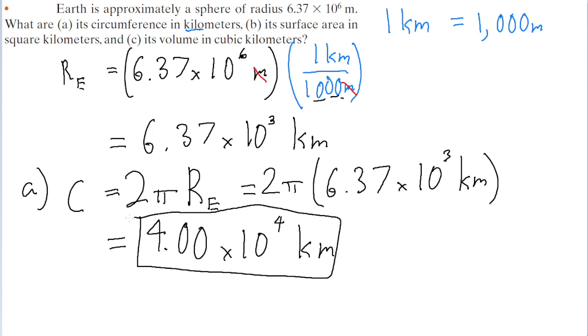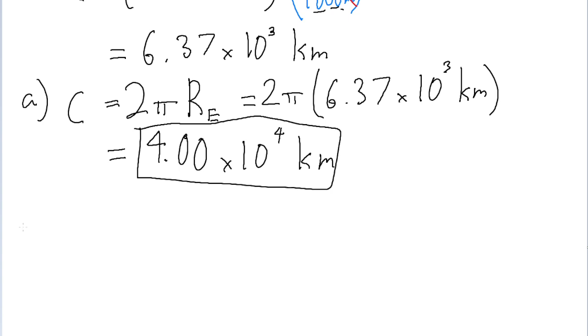The second part of the problem, part B, asks for the surface area of the Earth. So again, there's a formula we can use for this. If we have a sphere and we know its radius, then the surface area of that sphere is equal to 4 pi multiplied by the square of the radius.